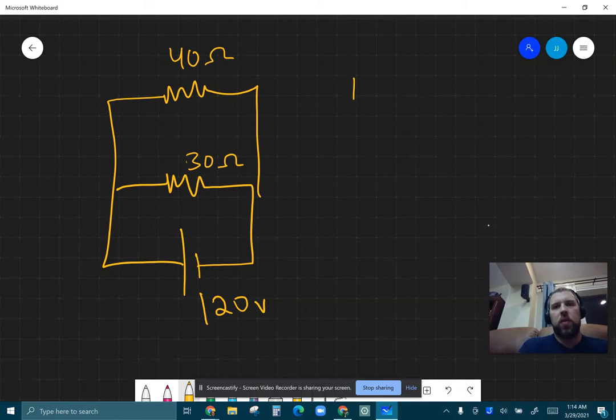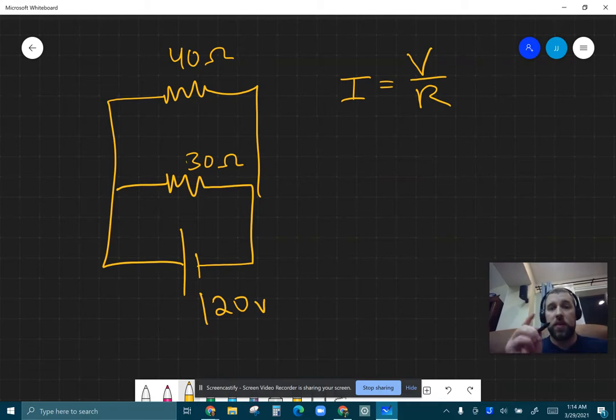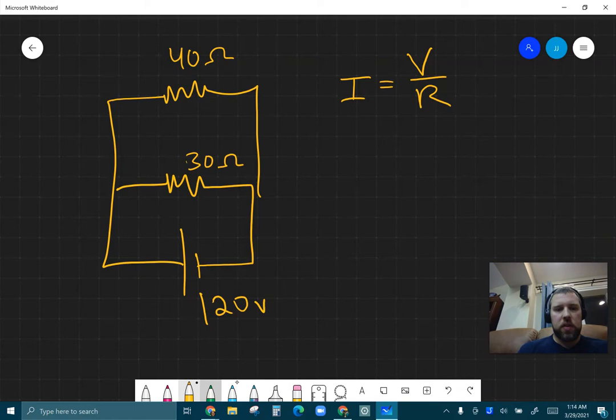Now I have Ohm's law which tells me that the current is equal to the voltage divided by the resistance, and that is still true. So if I consider my voltage here, I'm going to keep my voltage in green just to be consistent.